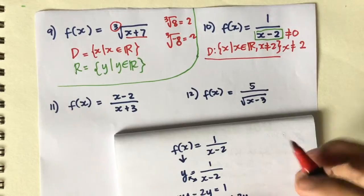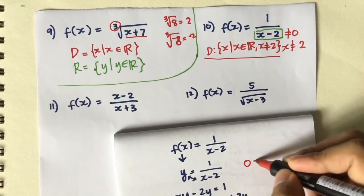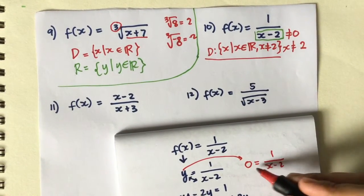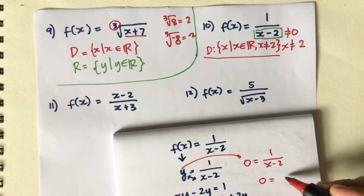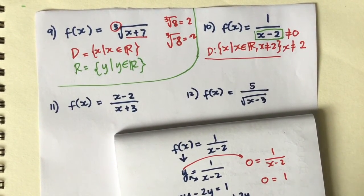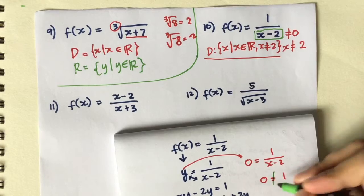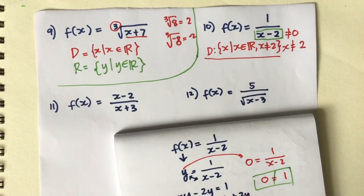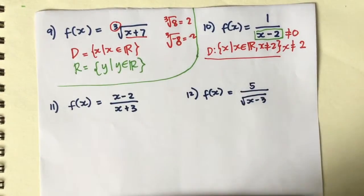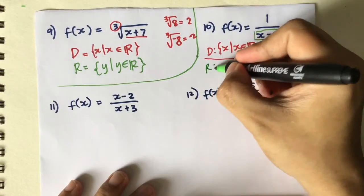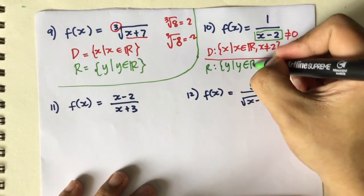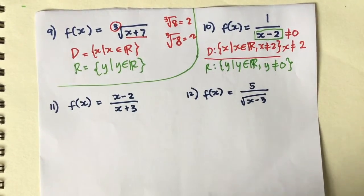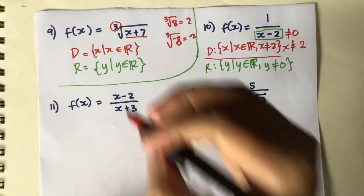We can verify: if y = 0, then multiplying (x - 2) by 0 gives 0, which cannot equal 1 — a contradiction. So 0 is not allowed. Therefore, the range is all real values of y except y = 0.